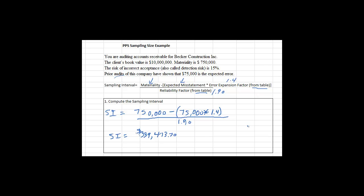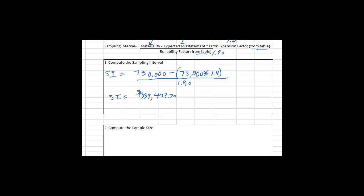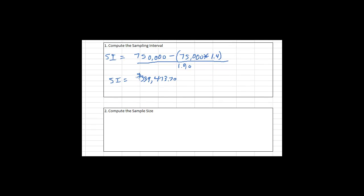If you remember from the PPS introduction slides, this sampling interval is the multiple of the dollars that we'll use — or hopefully a computer would use — in looking for which items to put in the sample. We would like to know what the sample size is, so we know approximately how many letters we'll send. The sample size is the population divided by the sampling interval — in other words, the account balance divided by the sampling interval.